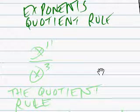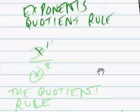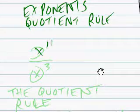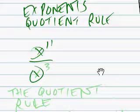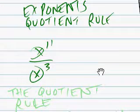And let's simplify. We have x to the eleventh over x to the third. And what do we do?